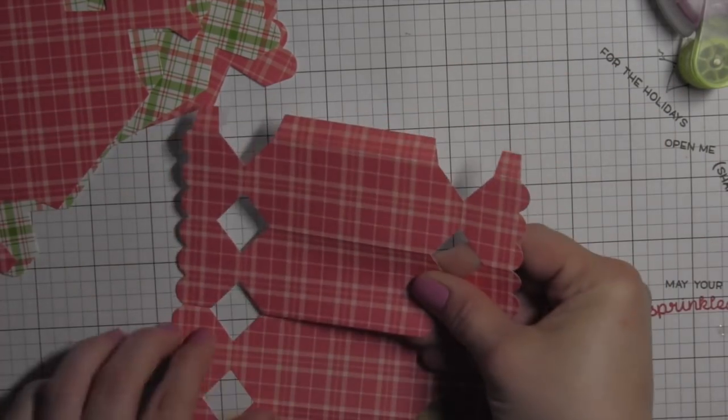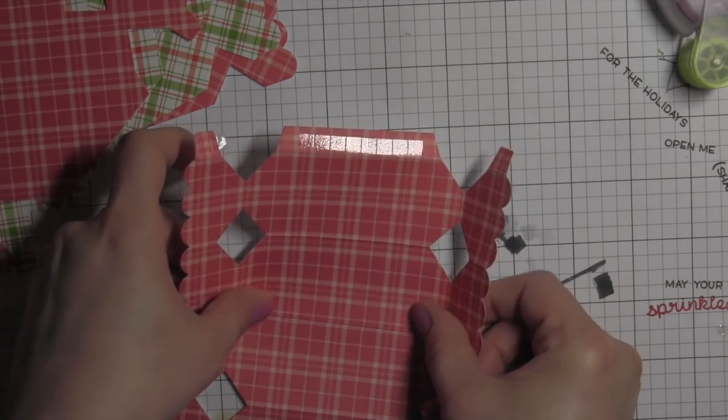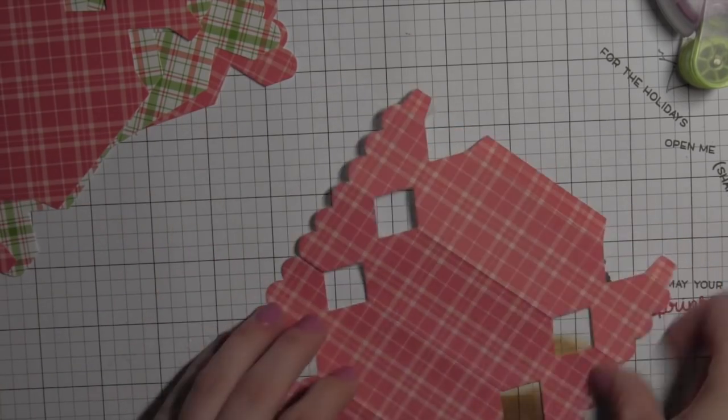With the candy box it's so great because you just lay it flat, line it up, and go ahead and adhere those two pieces together.